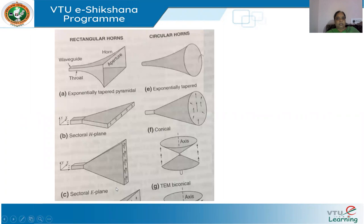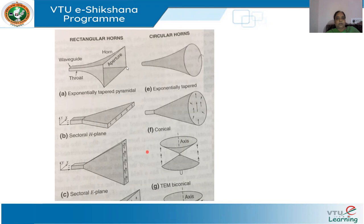The types of horn antennas we have studied include rectangular horn antennas and circular horn antennas. For rectangular horn antennas, we have many types: exponentially tapered, sectoral H and E, and pyramidal. This section will be talking about rectangular horn antennas.